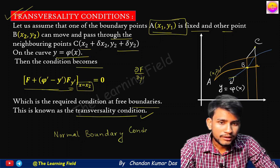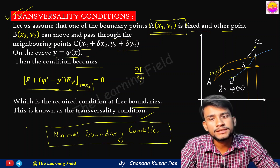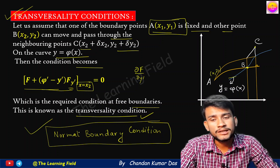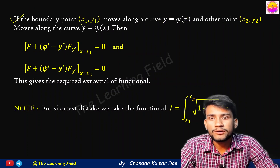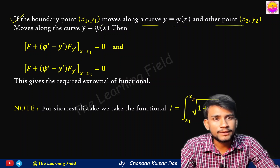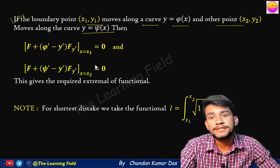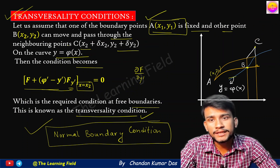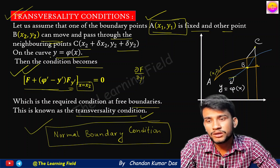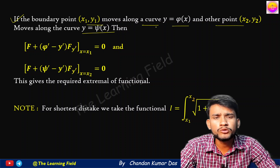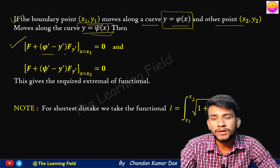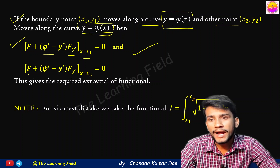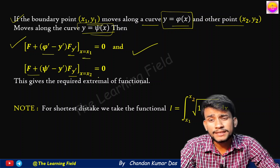There is also an extended form called the natural boundary condition, which will be covered in a separate lecture with corresponding examples. When both boundary points move — x1, y1 along the curve y = φ(x) and x2, y2 along the curve y = ψ(x) — the conditions become: [f + (φ' − y') · ∂f/∂y'] at x = x1 equals zero, and [f + (ψ' − y') · ∂f/∂y'] at x = x2 equals zero.